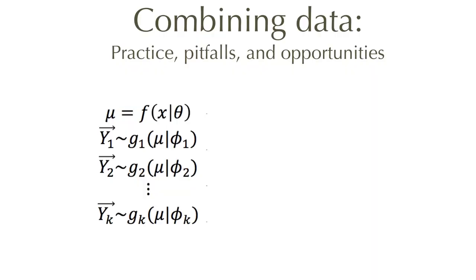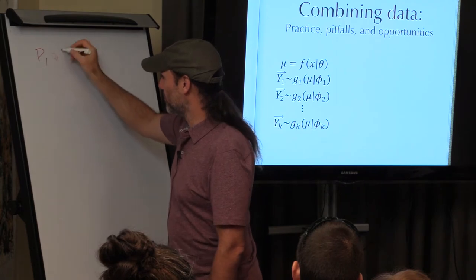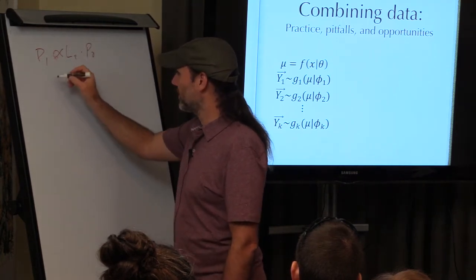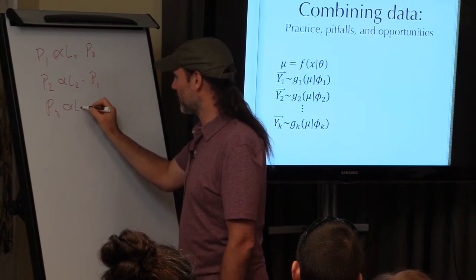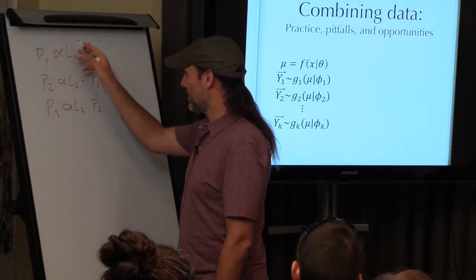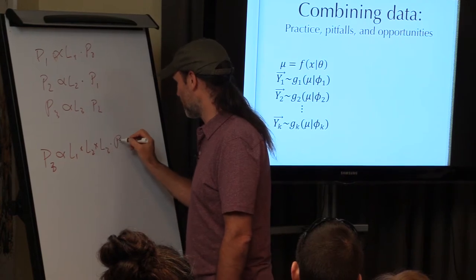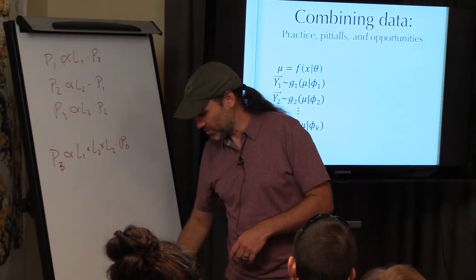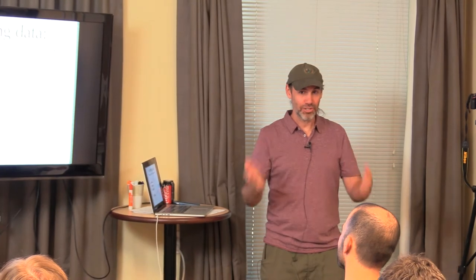Next, what if we want to assimilate all data at once rather than iteratively? Mathematically they are equivalent. Posterior one is proportional to likelihood one times the original prior; posterior two is proportional to likelihood two times prior one; posterior three proportional to likelihood three times prior two — which is mathematically equivalent to saying posterior three is proportional to likelihood one times likelihood two times likelihood three times the original prior. Whether you fit data all at once or iteratively, you should get the same answer.